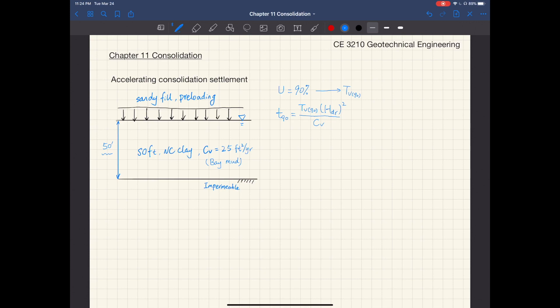The coefficient of consolidation C sub V is 25 feet squared per year, which is a reasonable number for some soft clay like bay mud.